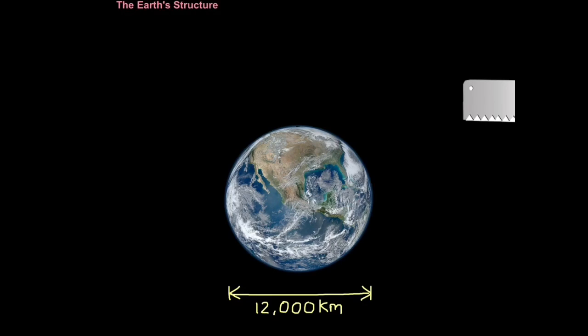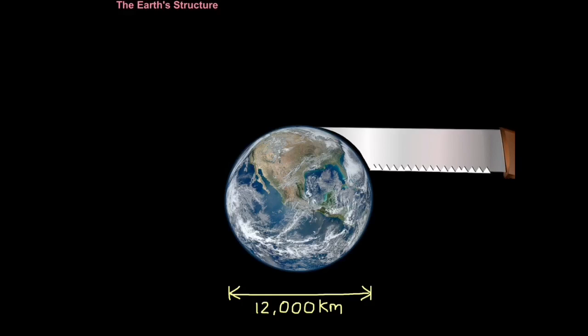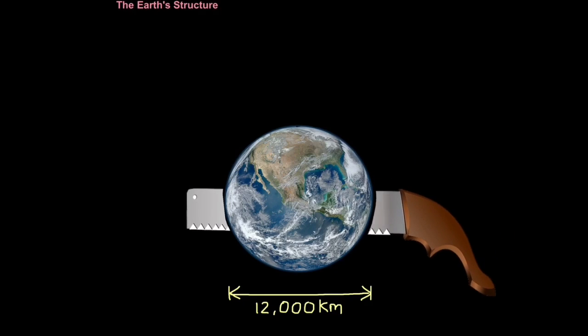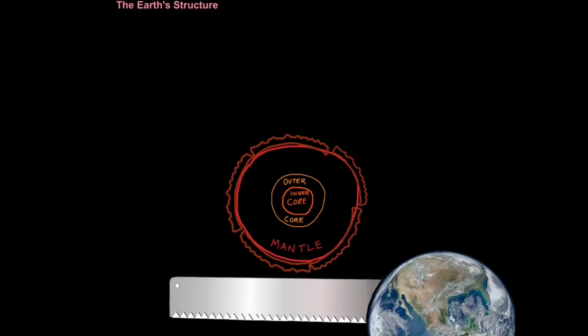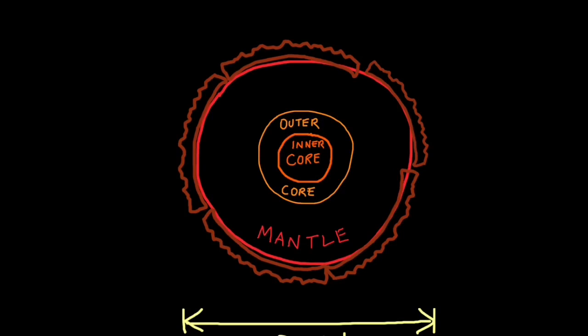But for us to understand that the earth is not a static system, it's always in a state of change, we need to look inside the earth. So we need to take a cross section through the earth. Once we do that, we can see that the earth is made from distinct layers.